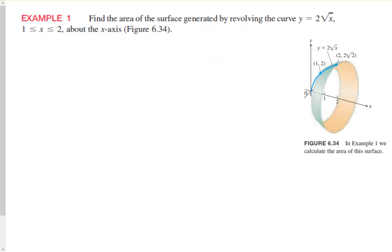Let's look at our first example: find the area of the surface generated by revolving the curve y = 2√x from x = 1 to x = 2 about the x-axis. The graphic shows the square root function with a coefficient of two, making it a bit steeper than a traditional square root function. We take the piece from one to two, revolve that curve, and find the area of that surface.